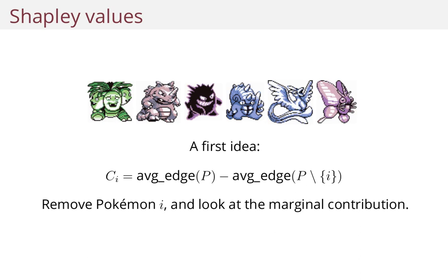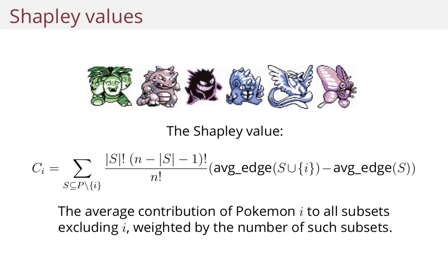You remove it, and then you add it and say, how much did the overall score improve when I added this Pokemon? That's a good idea. But there's an extension of this idea called the Shapley value. What it does is it looks at every single subset that doesn't have Pokemon i, and then it adds Pokemon i.